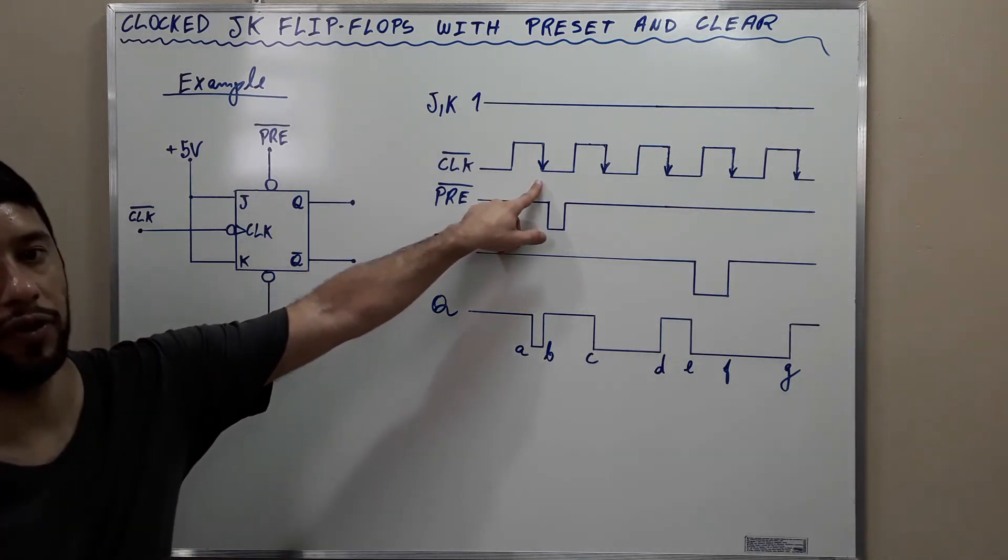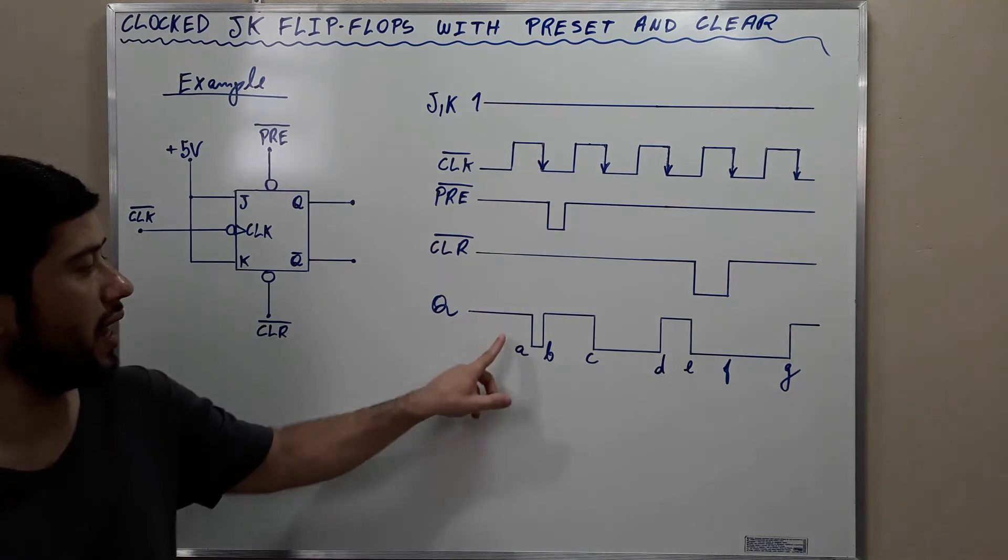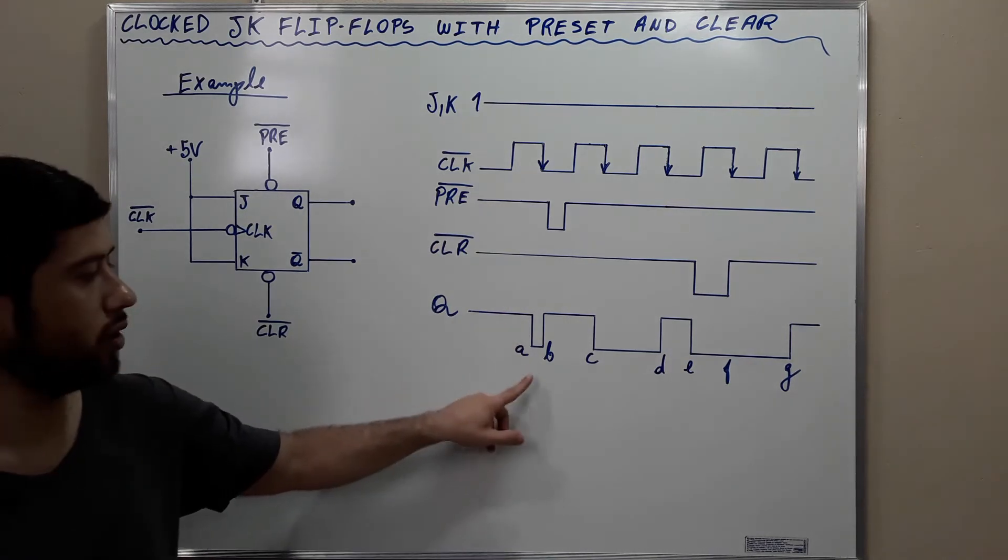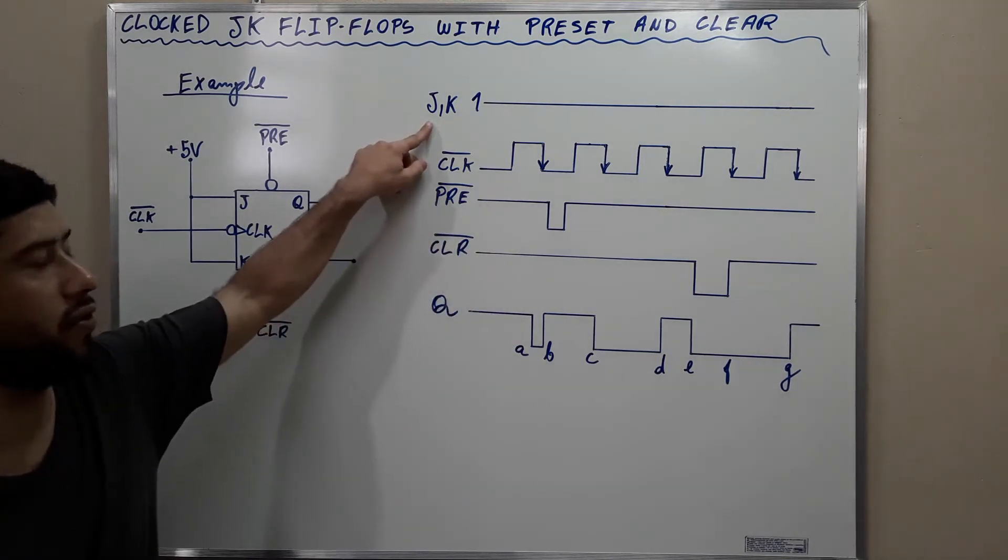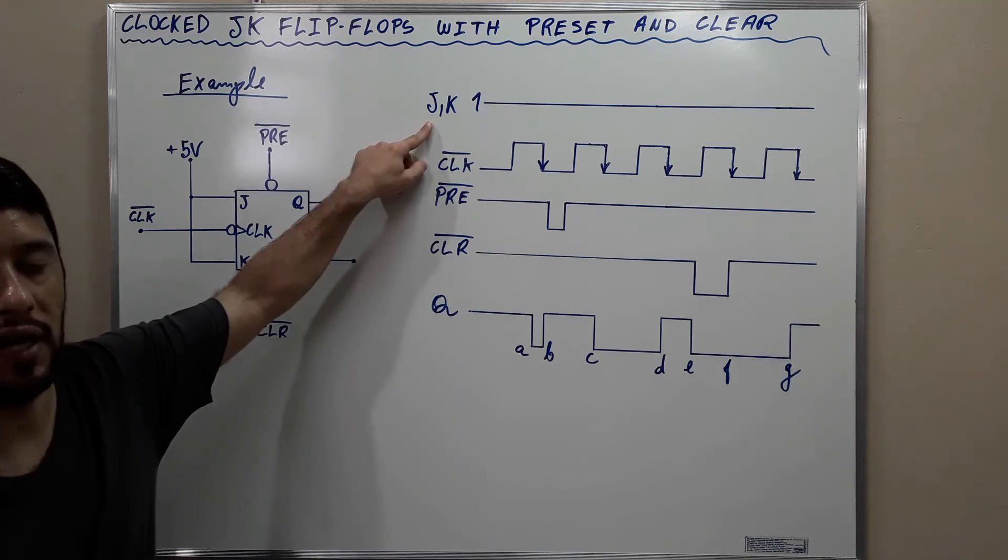And in the first negative going transition of the clock, the output toggles from 1 to 0. Remember that it happens whenever both J and K are 1.